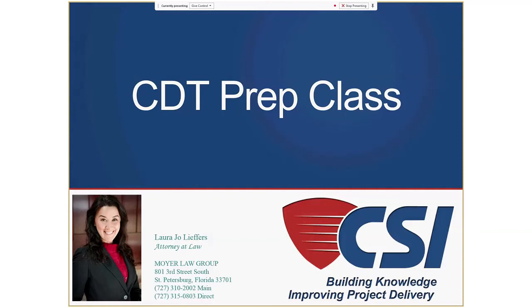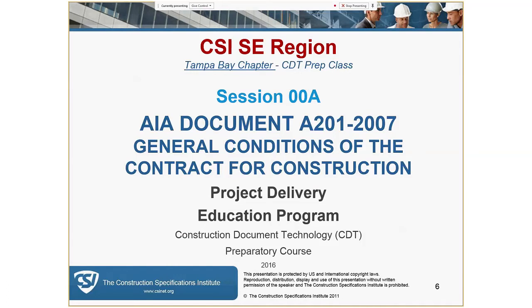This is the introduction to the AIA A-201. It's the first session in a series of 12 sessions based on the CSI's Project Delivery Practice Guide. There are several questions on the exam that come directly from these general conditions, and it really is the basis of the administrative thought for the remainder of the questions. You need to be very familiar with this document. A copy of the A-201 commentary would also be very helpful, and that commentary is available through the AIA website.